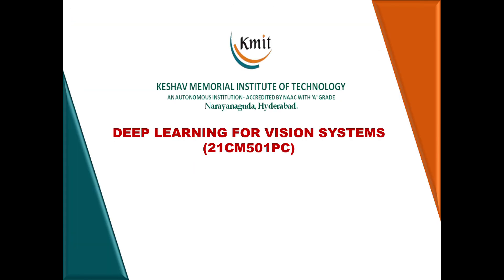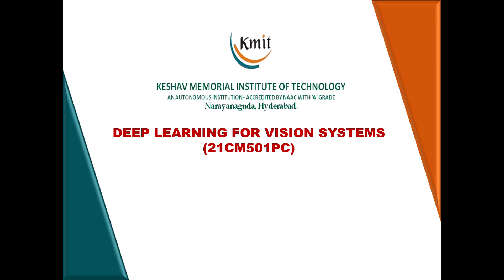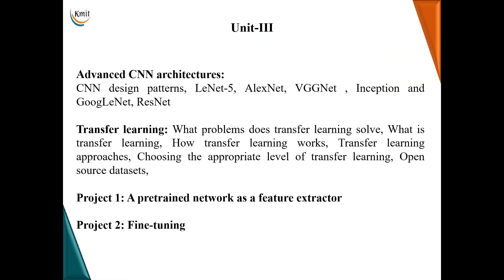Before moving on to the first topic, let us have a brief overview of the syllabus. The first part covers different CNN architectures starting from LeNet-5 all the way to ResNet. LeNet-5 was developed in 1998 and ResNet in 2015, so we can see the advancement as we move from one architecture to another. In the second part we will discuss transfer learning and how it can be used to solve complex neural network problems, and the remaining sessions will be hands-on.